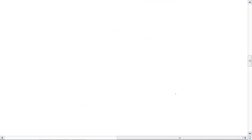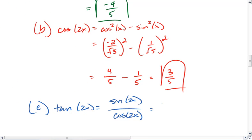So we get negative 4 fifths divided by 3 fifths. Negative 4 fifths times 5 thirds, which equals negative 4 thirds.